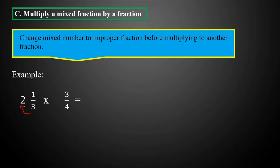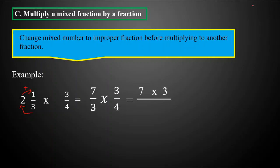Three times two equals six. Then we add the product to the numerator, which is one: six plus one equals seven. We copy the denominator, which is three, giving us seven-thirds. We copy the operation and the second fraction, three-fourths. Now we multiply the numerators: seven times three, and the denominators: three times four.